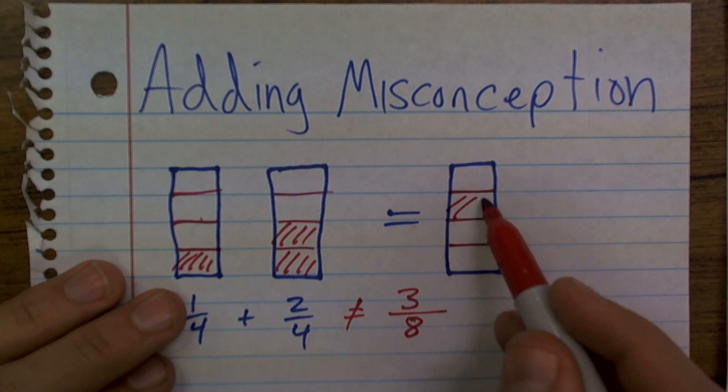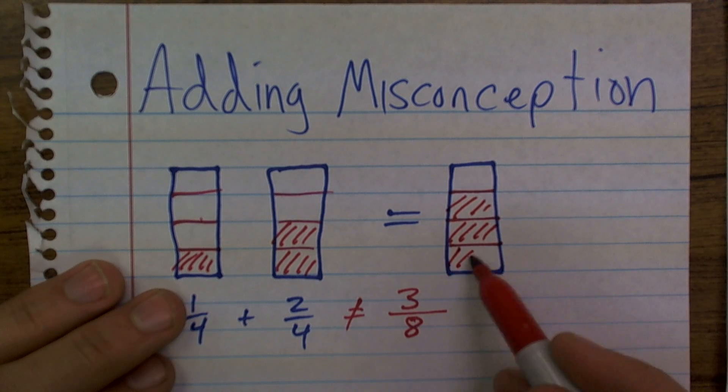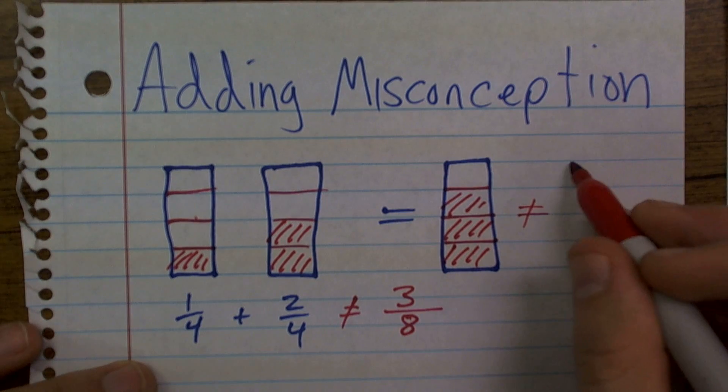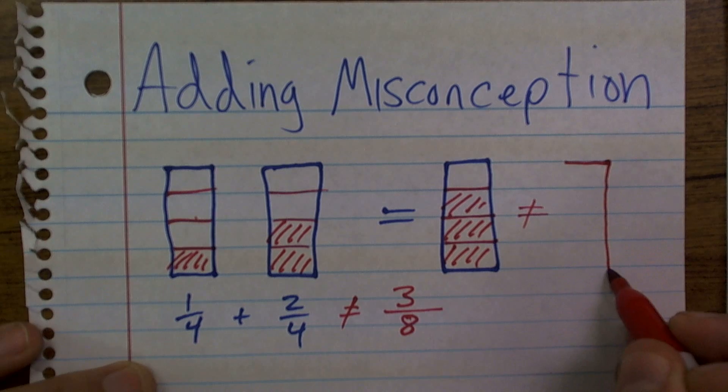So if I have three parts now out of four, it's going to look something like this. What it's not going to look like is what some students do when they add,